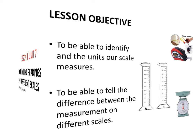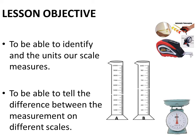Our objective — we must always know why we're studying. By the end of this class we must be able to identify and read the units that our scale measures. For example, if I look at a scale I should be able to tell if it's measuring in kilograms or grams. In most cases every scale will have its units written on it. Some measure in kilograms and grams, some only in grams, some only in milliliters, and some in both milliliters and liters at the same time.